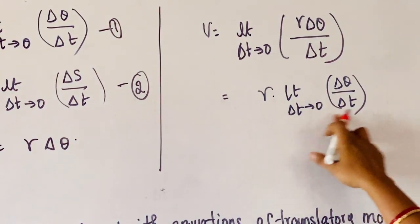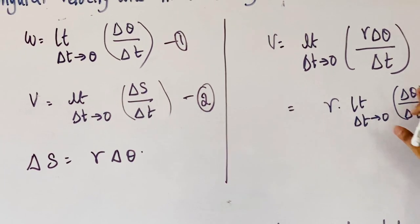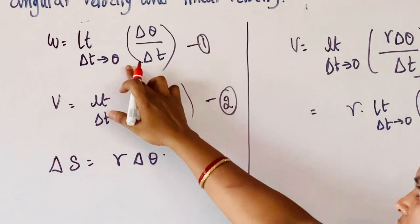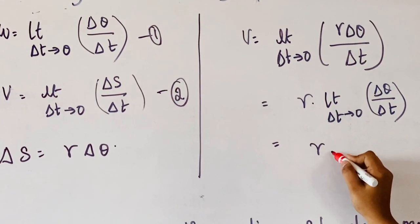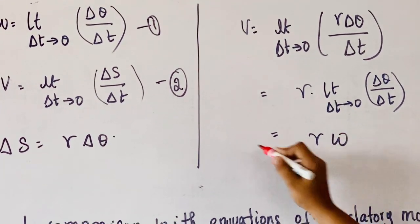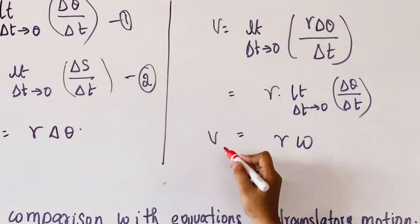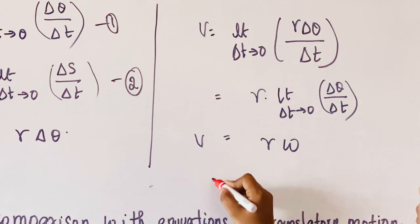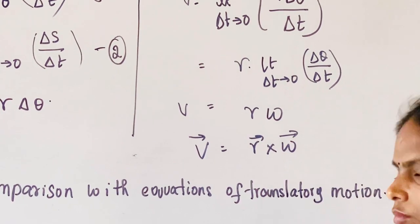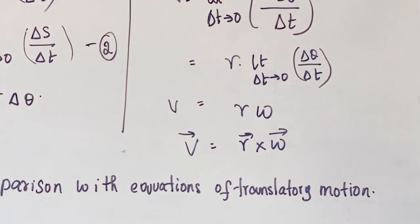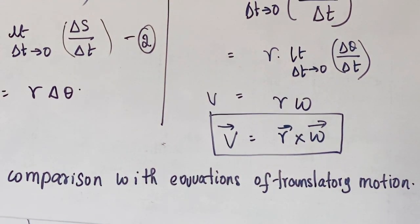When we observe this equation, the limit as delta-t tends to 0 of delta-theta by delta-t is nothing but the first equation for omega. So we replace it with omega, and from this we get v equals r·omega. Since v is a vector quantity, it can be written as v-bar equals r-bar cross omega-bar. This is the relation between angular velocity and linear velocity, and it is a very important formula used in solving many problems.